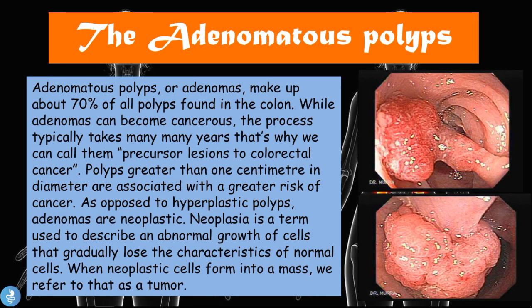Now let's talk about a polyp that is a little more aggressive in nature: the adenomatous polyps. Adenomas make up about 70% of all polyps found in the colon. While adenomas can become cancerous, the process typically takes many years, which is why we can call them precursor lesions to colorectal cancer. Polyps greater than one centimeter in diameter are usually associated with a greater risk of cancer. As opposed to hyperplastic polyps, adenomas are neoplastic — a term used to describe an abnormal growth of cells that gradually lose the characteristics of normal cells, and when they form a mass they can be referred to as a tumor.